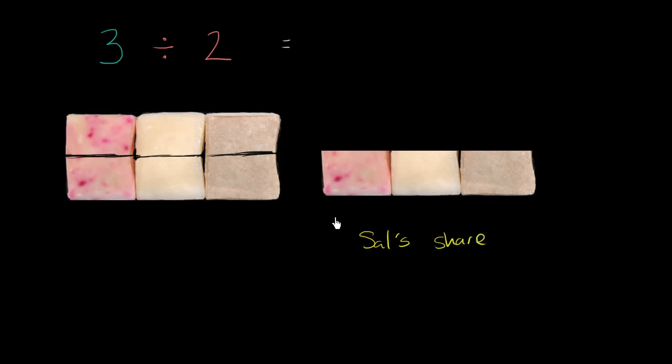What do I have? I have one half, I have another one half, and I have another one half of a bar. So I have three one halves of bars of soap, or you could say that I have three times one half bars of soap.